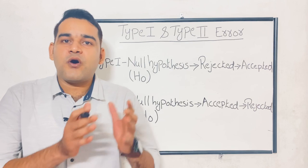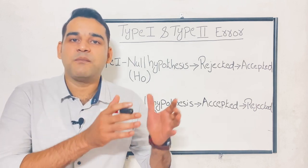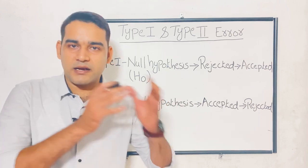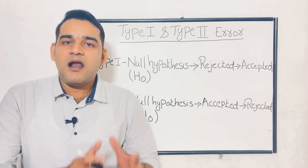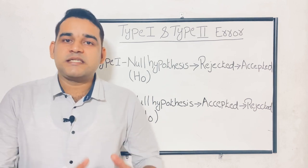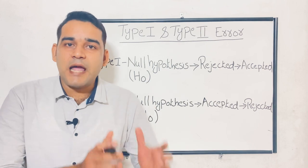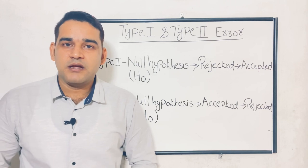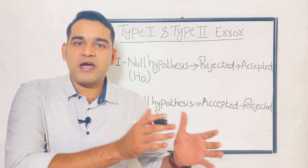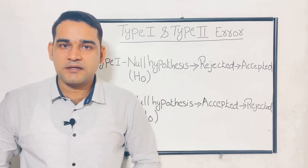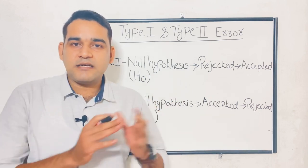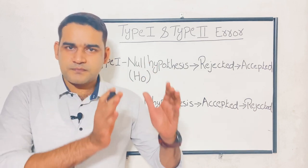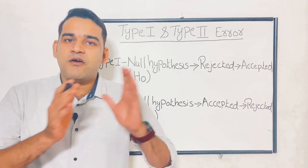Before moving to the topic, you should know regarding what is null hypothesis — then only you will get a better idea regarding type 1 and type 2 error. Null hypothesis is a type of hypothesis which states that there is no relationship between the independent and dependent variable.